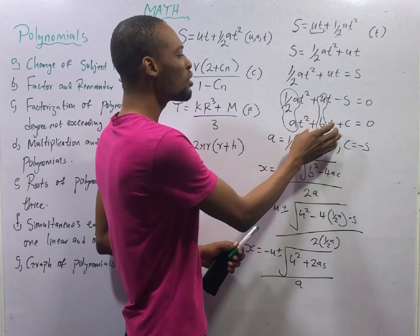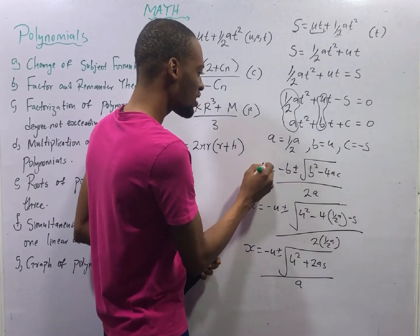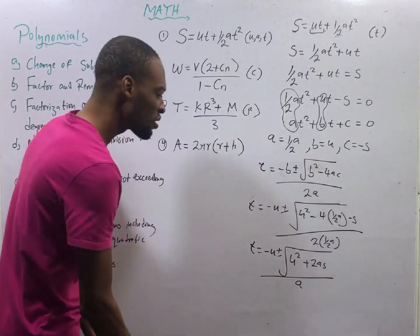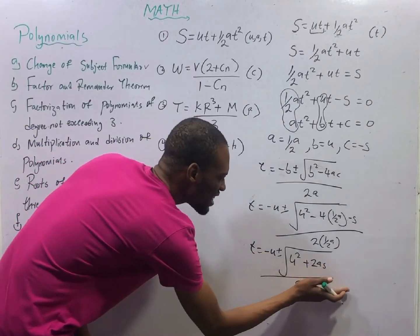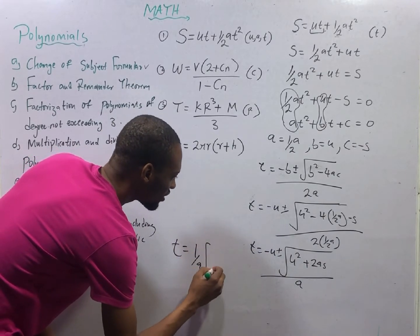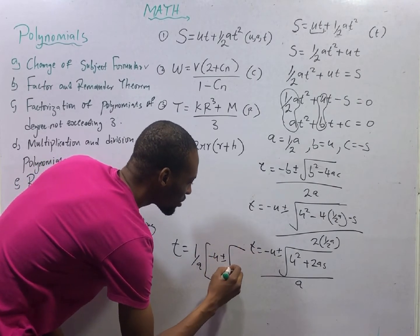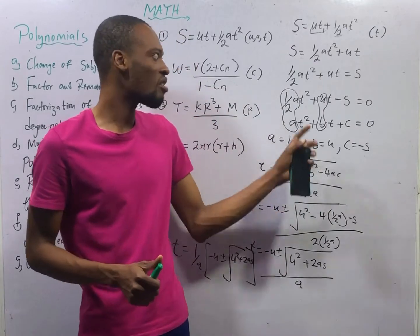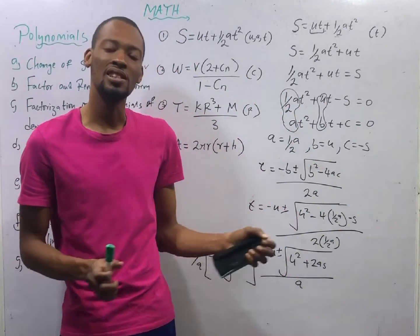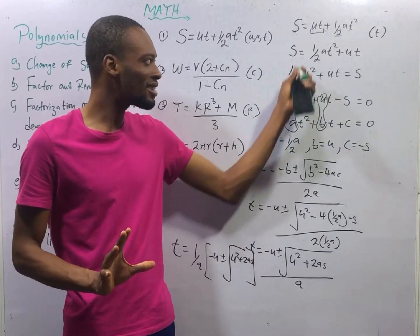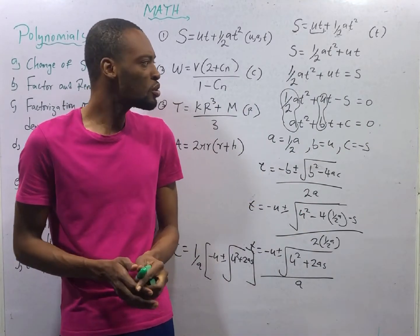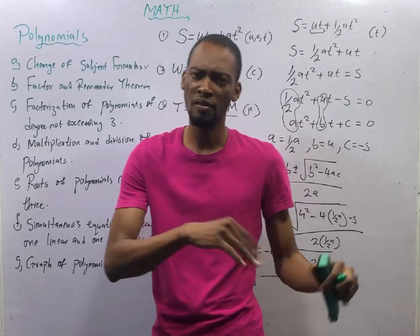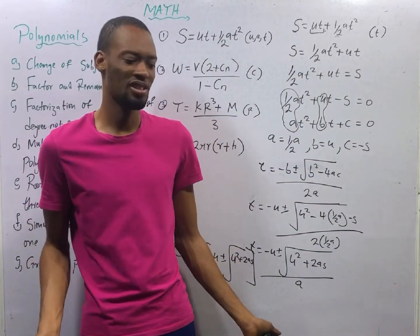This is the standard quadratic formula, but this time the variable is T, not S. So T equals negative U plus or minus the square root of U squared plus 2AS, all over A. You can simplify it as T equals one over A times (negative U plus or minus square root of U squared plus 2AS). Anywhere you see questions like this in theory or at university level, that is how it is solved. This is the most difficult question you will see on change of subject formula at O-level or even 100 level. I am training you for the worst so you know everything.